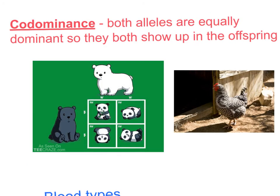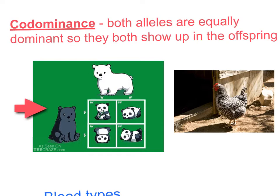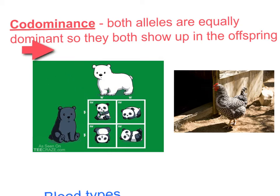Our third form of inheritance is called codominance. In codominance, both alleles are equally dominant, so they both show up in the offspring. This first cartoon shows us how pandas are made — a white bear mates with a black bear and we end up with pandas, right? No, that's actually not how it works, but I found this cartoon on the internet and I thought it was really cute. It kind of shows you the idea behind codominance. If you have one organism with dominant traits mating with another organism with equally dominant traits, both of the traits are going to show up.